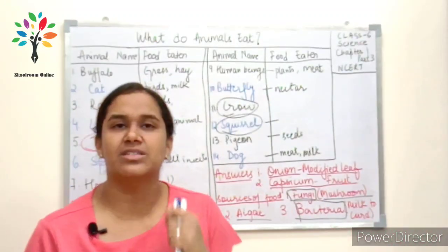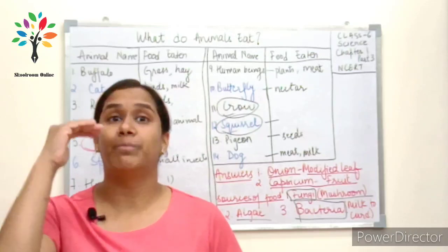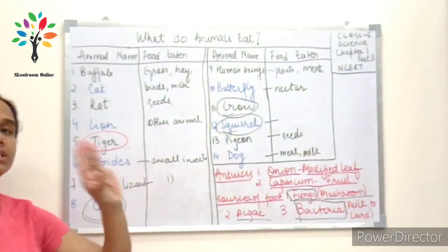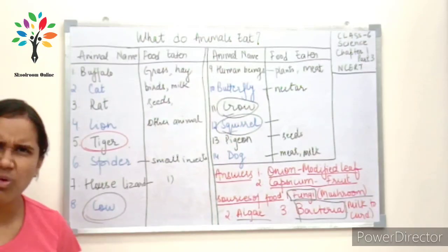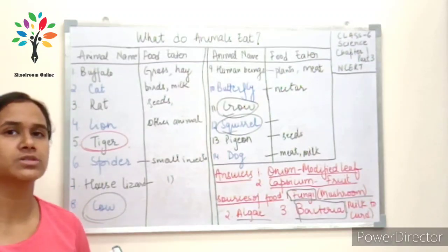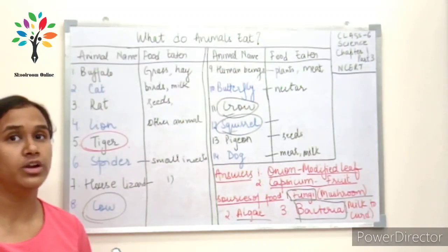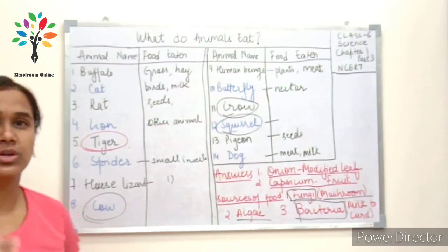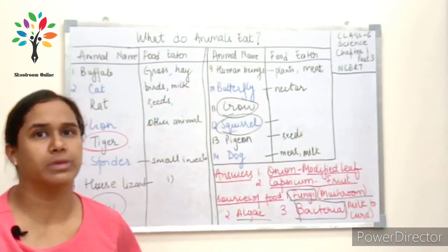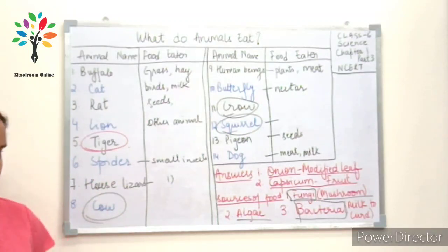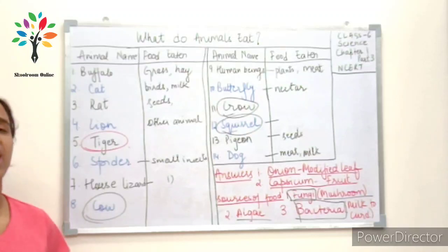Now, why are we discussing what animals eat? Based on what they eat, we are going to divide these animals into three different categories. We will divide them based on the type of food they are eating. The first type: plant-based — animals which eat only plants or plant products.